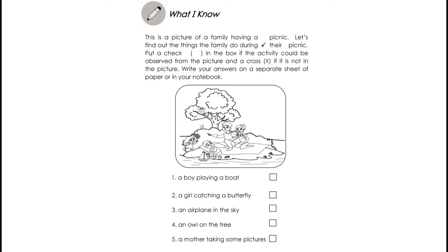Number 1: A boy playing a boat. Can you see that in the picture? Is there a boy there playing a boat? If yes, put a check in the box. And if not, put a cross or X in the box. Number 2: A girl catching a butterfly. Can you see a girl there catching a butterfly? Number 3: An airplane in the sky. Is there an airplane in the sky? Number 4: An owl on the tree. And Number 5: A mother taking some pictures.